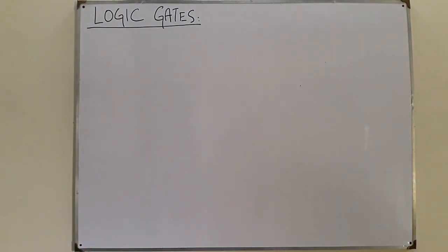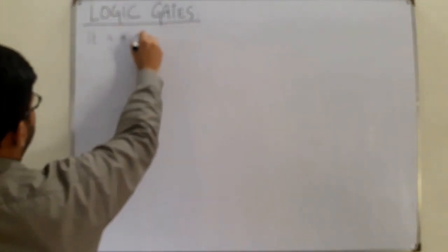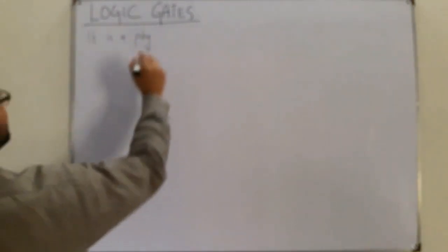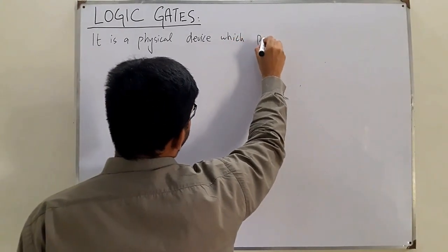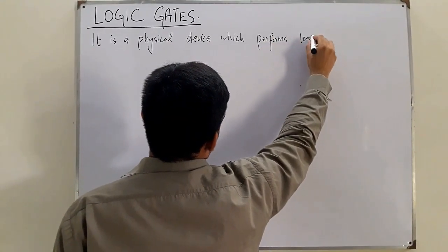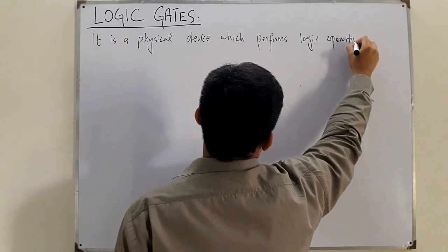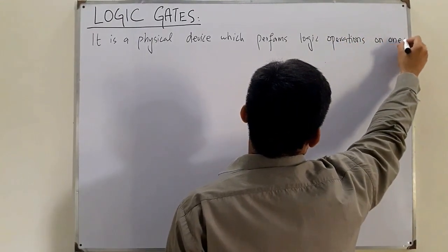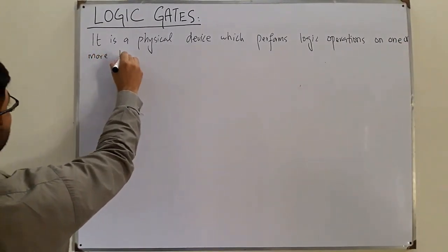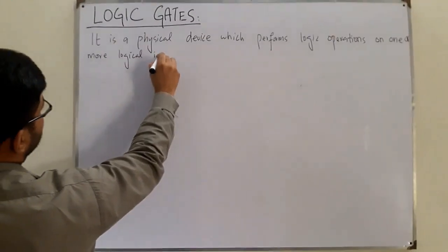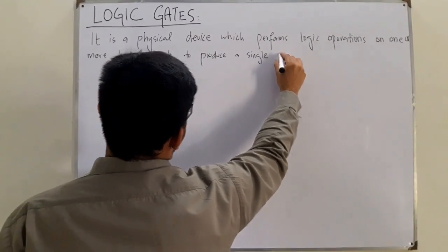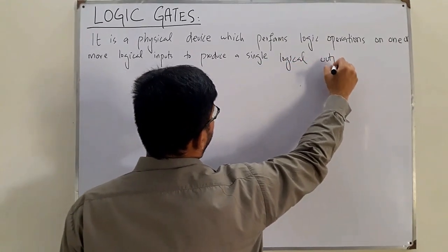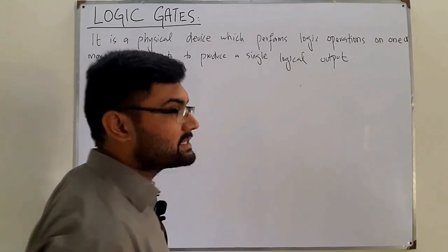So let me write the definition of a logic gate. A logic gate is a physical device which performs logic operations on one or more logical inputs to produce a single logical output. This is a very basic definition of a logic gate.